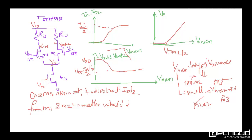In the earlier problem we solved, we have seen that M3 will reach saturation earlier compared to M1 and M2, when Vincommon mode was 21.3 and Vb was 1V. But here Vincommon mode itself is varying.